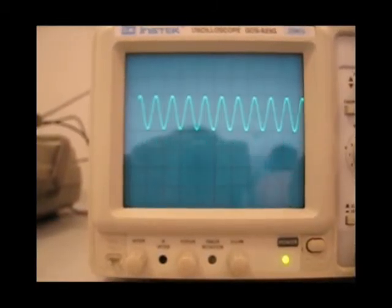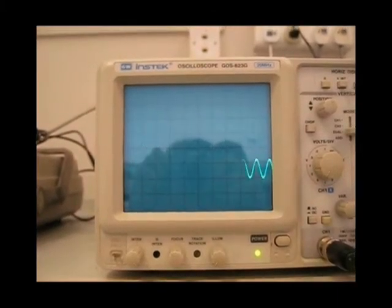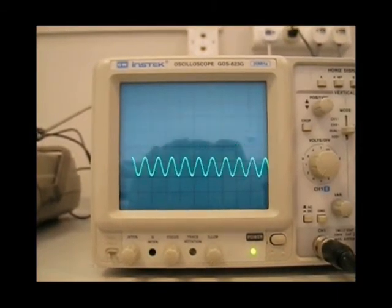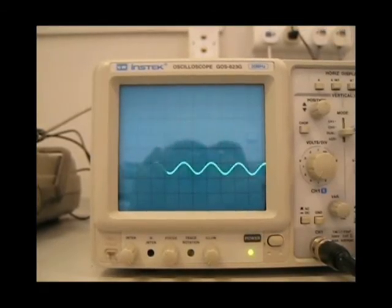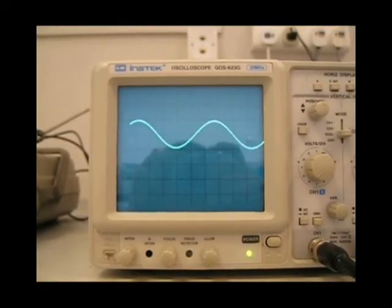That is because only high frequency signals can pass through for high pass filter. Next we decrease the frequency, we can see that the output signal also decreases until no signal.